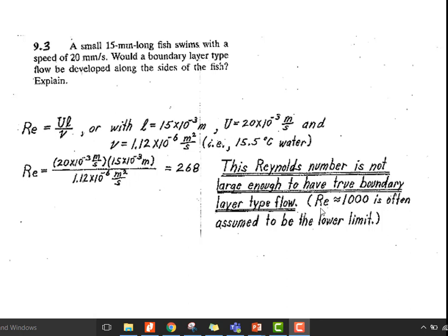Problem 9.3: A small 15-millimeter long fish swims with a speed of 20 millimeters per second. Would a boundary layer type flow be developed along the sides of the fish? Explain. If you remember from previous lectures, we discussed when boundary layer forms and the difference between viscous flow and inertial flow. The basic parameter to check whether the flow is viscous dominated or inertial dominated is the Reynolds number.